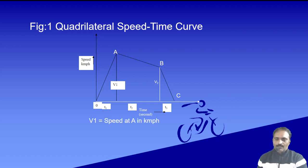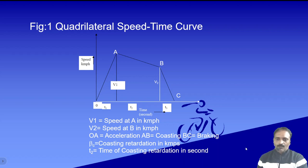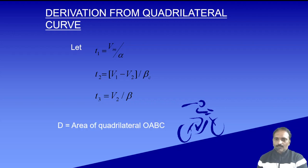We consider v1 as the speed at A in kmph, v2 as the speed at B in kmph. OA is the accelerating period, AB is the coasting period, and BC is the braking period. Beta-c is the coasting retardation in kmph/s, and t2 is the time of coasting retardation in seconds. We have: t1 = v1/alpha, t2 = (v1 - v2)/beta-c, and t3 = v2/beta. D is the area of quadrilateral OABC.